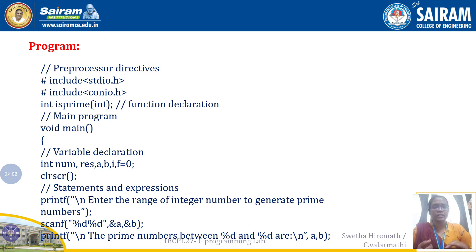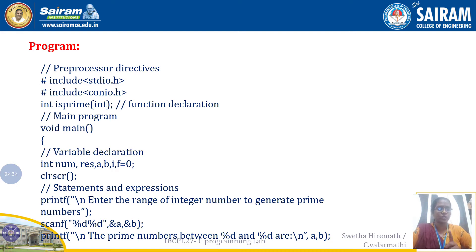The first step is the inclusion of header files. Here stdio.h is the primary header file that has been included. Before going to the main function, we need to declare which function is going to be implemented. I have named this function 'isPrime'. It takes one input argument and returns an integer. So the return type is integer, the function name is isPrime, and it takes an int argument. This is my function declaration.